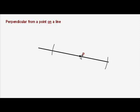If we have a compass, we open it up to a certain distance and just mark those two points without changing the opening. That distance is the same from P as that is. So now, if we draw the perpendicular bisector of those two points, we're going to get a perpendicular line through P, which is what we want.